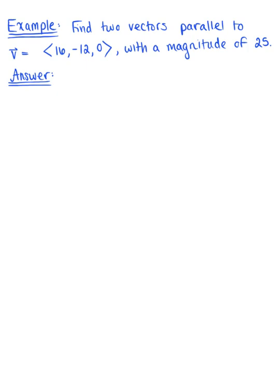Find two vectors parallel to vector v, which is defined by the components 16, negative 12, 0, with a magnitude of 25.